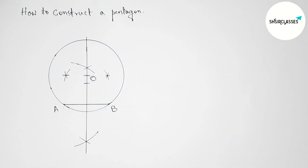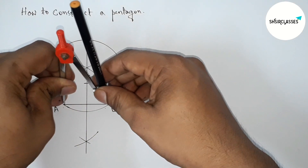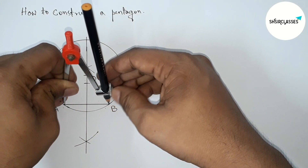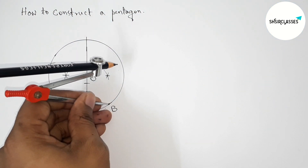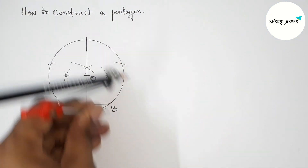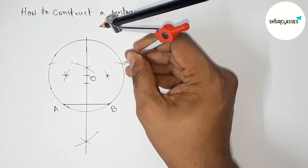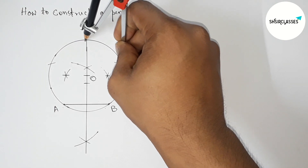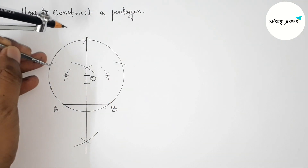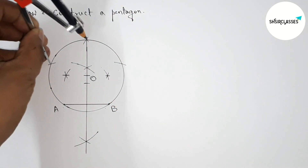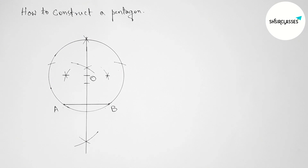Now extending this line and taking the length AB with the compass. Cutting here, then putting the compass on that point and cutting the next position. Continuing around — putting the compass here and cutting here, then putting the compass here and cutting here. This gives us approximately perfect vertex positions.